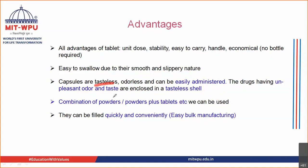Another advantage is that the capsule is tasteless and odorless. To make a tablet tasteless you need to coat it, but the capsule shell itself is tasteless, so drugs with unpleasant odor and taste can be easily enclosed inside. You can add powders, granules, or even tablets inside a hard gelatin capsule, and liquids or semi-solid preparations inside soft gelatin capsules.